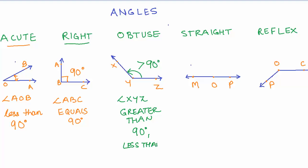A straight angle, as the name says, is a straight angle. Angle MOP measures 180 degrees, so a straight angle equals 180 degrees.